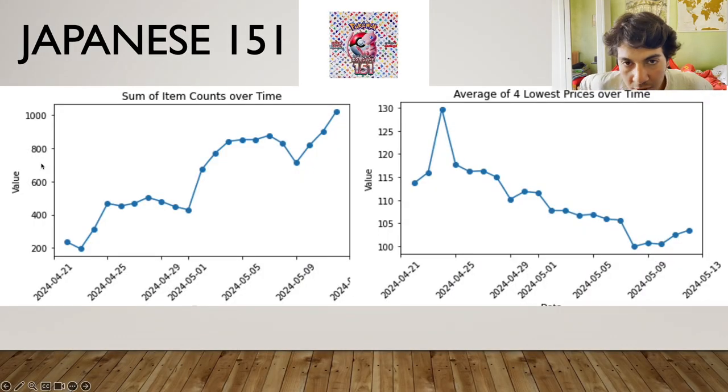So here I thought I would use a PowerPoint presentation, which kind of brings me back to middle school. And as you can see here, we have Japanese 151. Now these charts, as you can see here, these are taken from European listings on CardMarket.